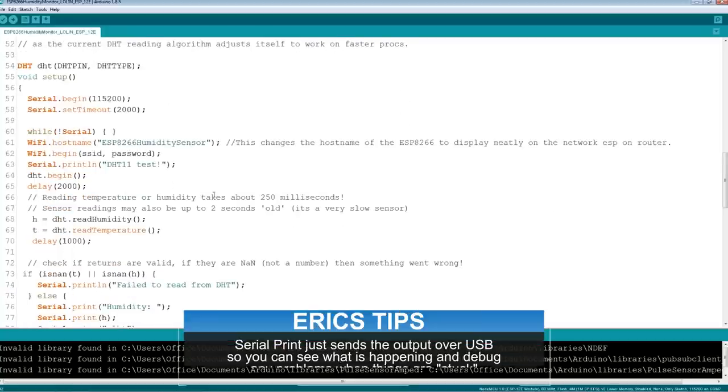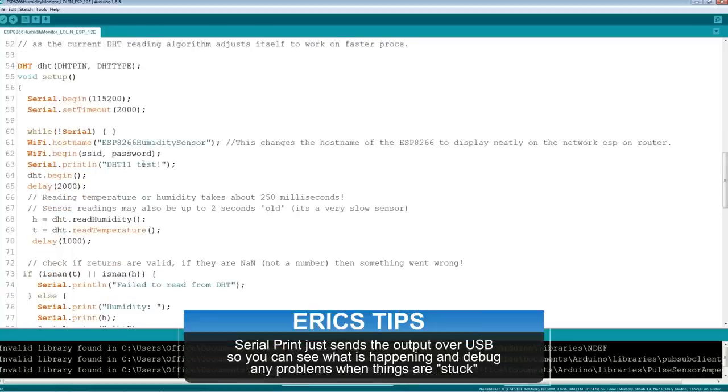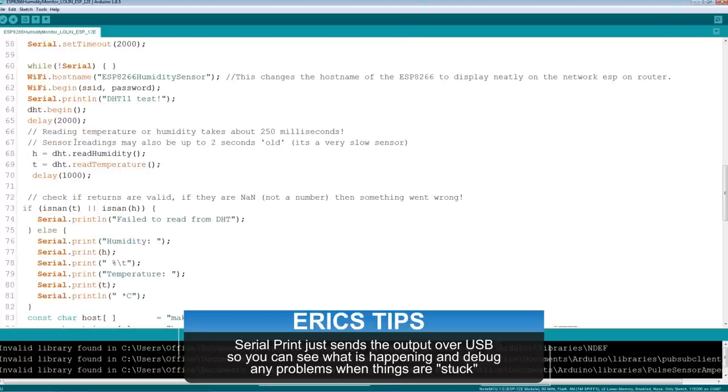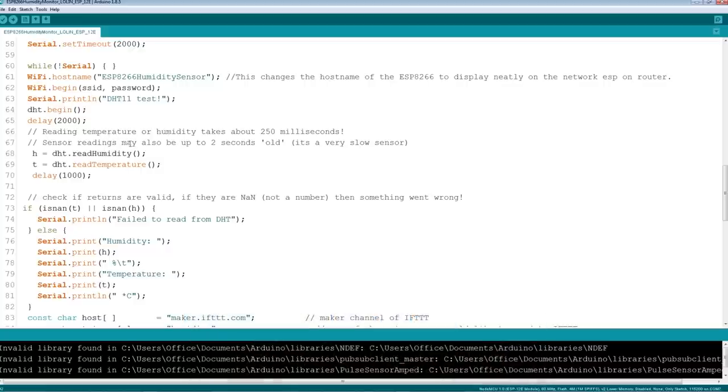We start our serial, we do a simple little print lines - handy for debugging. We do a delay of two seconds - that gives the time for the DHT sensor to pick up a good reading.